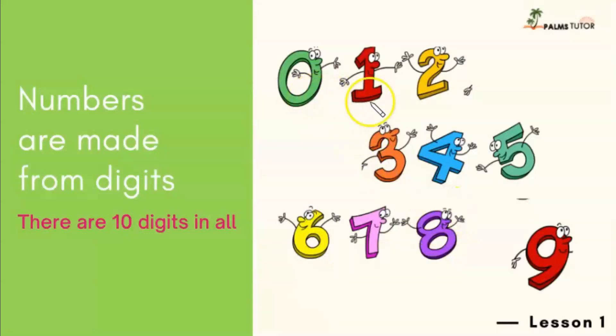Now how many digits do we have in all? 10 of them, starting from zero to nine. So if we count this together, we have zero, that's one, two, three, four, five, six, seven, eight, nine, ten. So there are 10 digits in all.